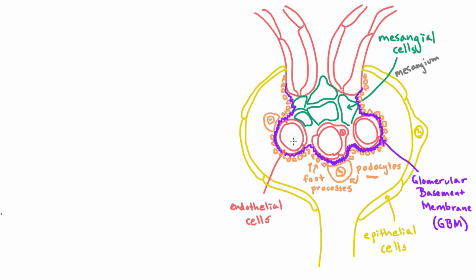For something to get filtered at the glomerulus, it would need to get through the capillary, the GBM, and the podocyte. Let's zoom in on this picture to get a better sense for how that works.